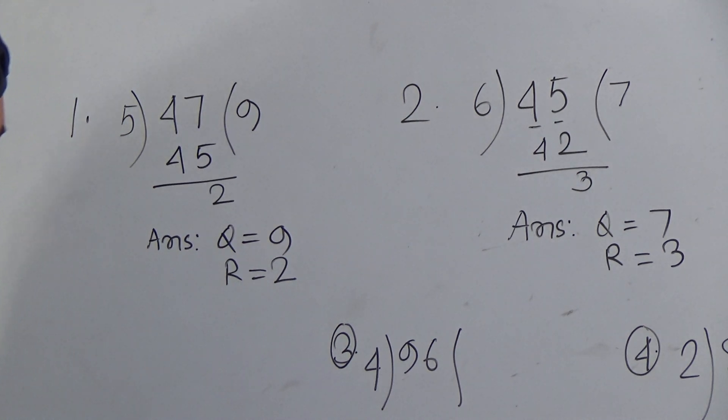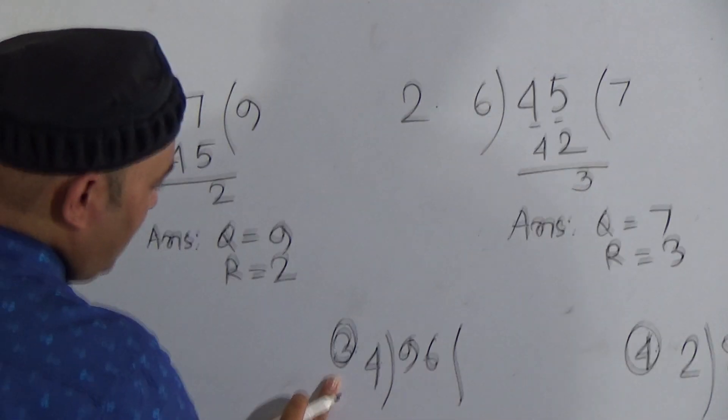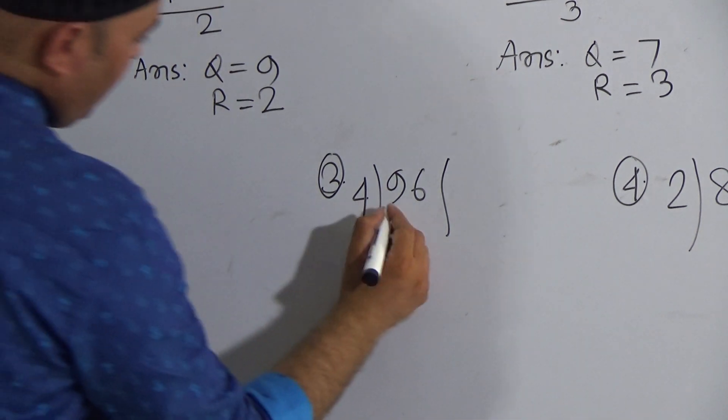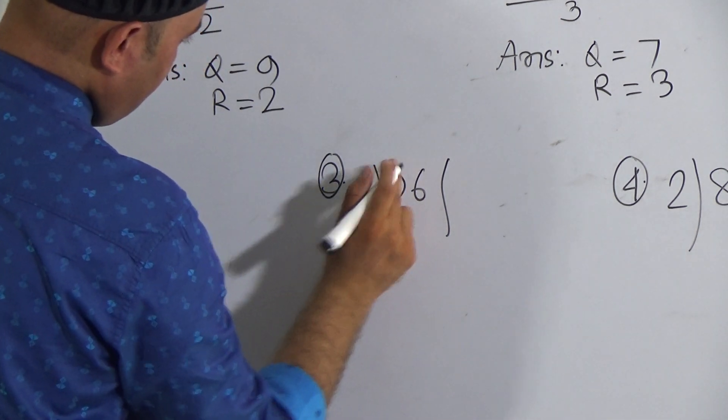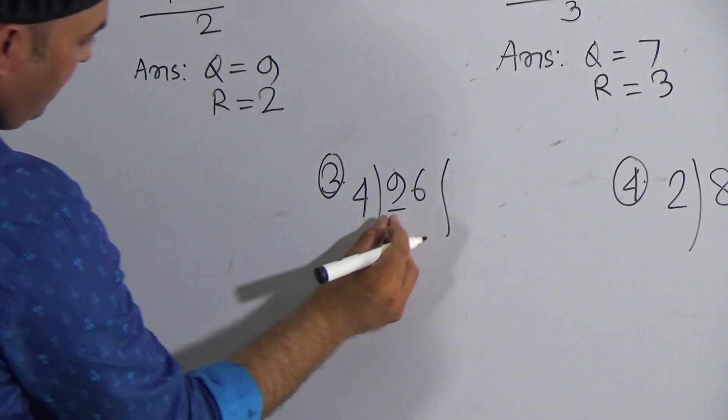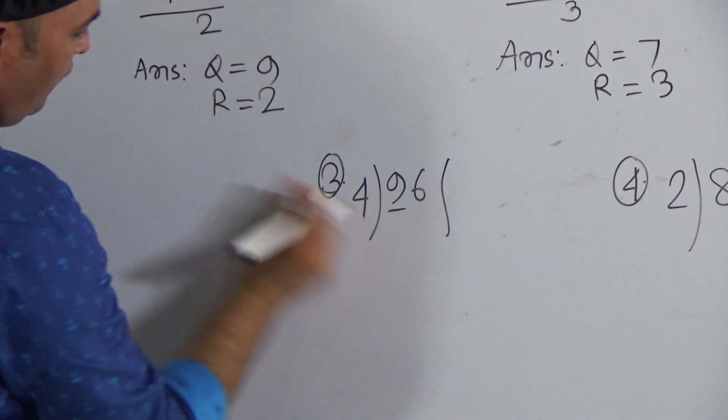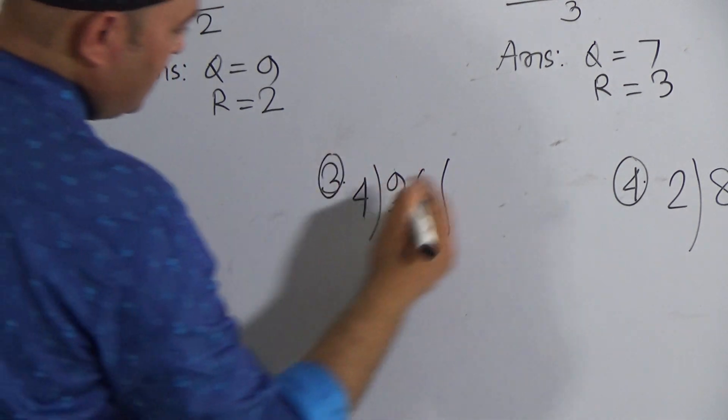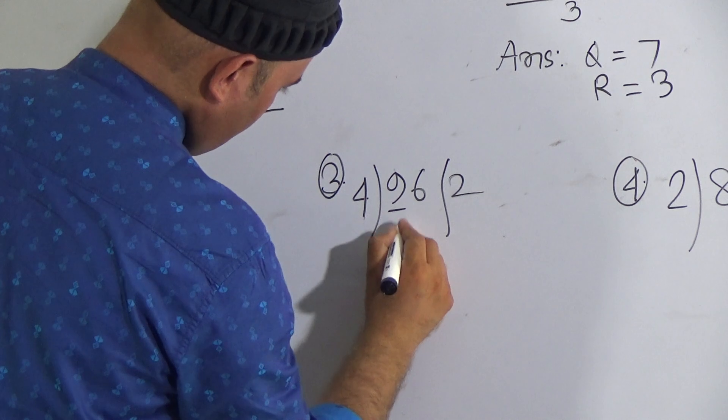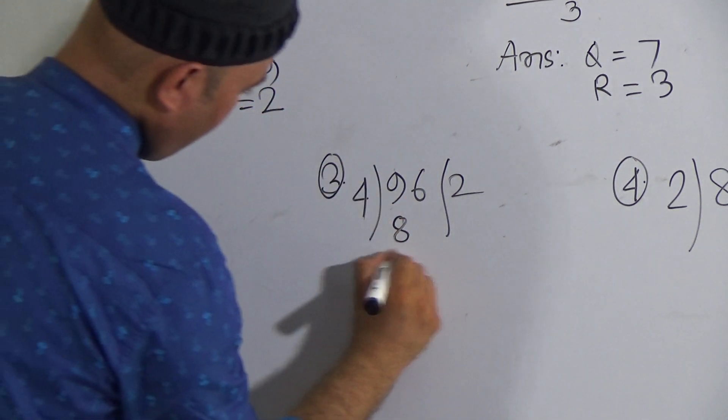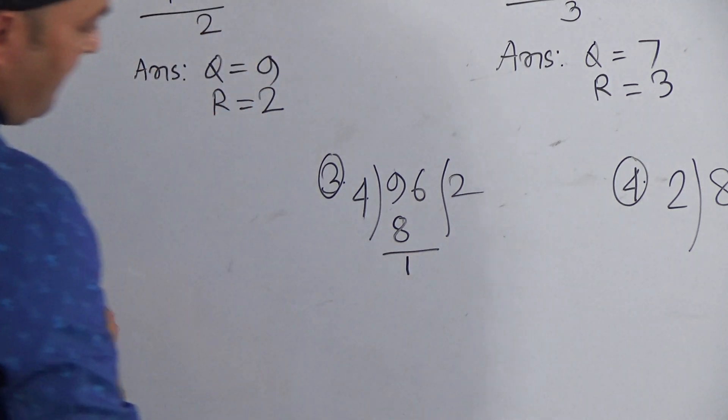Now let us go to question number 3. Here is 96 divided by 4. Look here, here is the first digit 9 is greater than 4, so you have to divide 9 by 4 at first and we know that 4 ones are 4, 4 twos are 8. 4 twos are 8. Now you have to subtract 8 from 9. Here it will be 1.